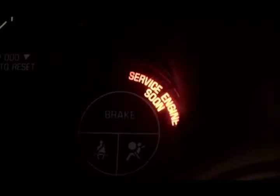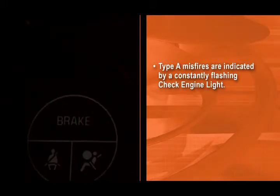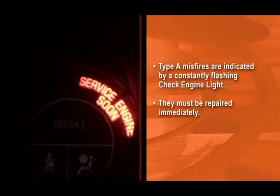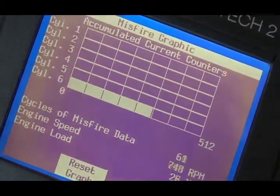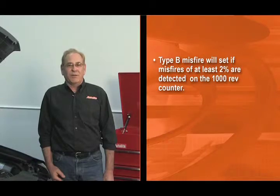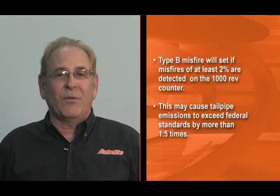There are two types of misfires: type A and type B. With a type A misfire, the check engine light will constantly flash. This type of misfire can potentially damage the catalyst and must be repaired immediately. A flashing check engine light indicates that the vehicle is experiencing a constant misfire. The driver will usually feel this type of misfire as well, because the engine will run roughly. Type A misfires will readily count up on the 200 rev counter in scan data. A type B misfire will set if misfires of at least 2% are detected on the 1000 rev counter.